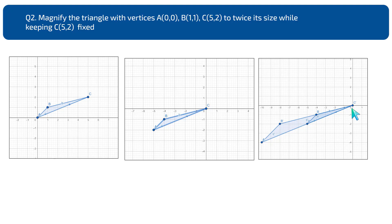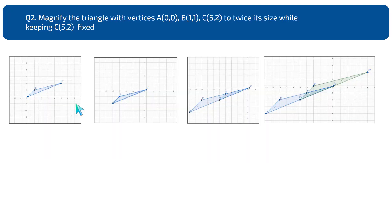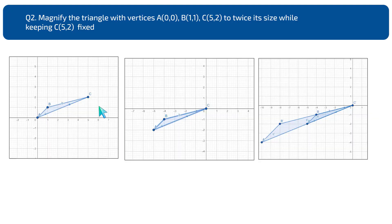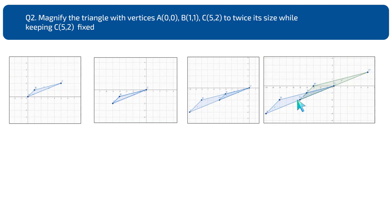Since we took the initial translation for support, we have to undo it and bring the object back to its actual position. We translate the object again by positive 5 units on the x-axis and positive 2 units on the y-axis, so C returns to its actual position at (5,2).